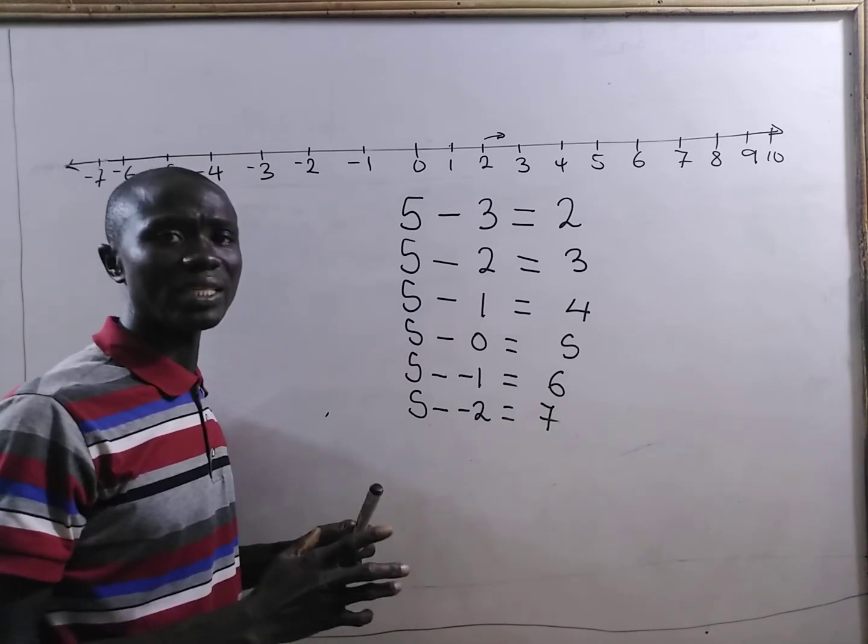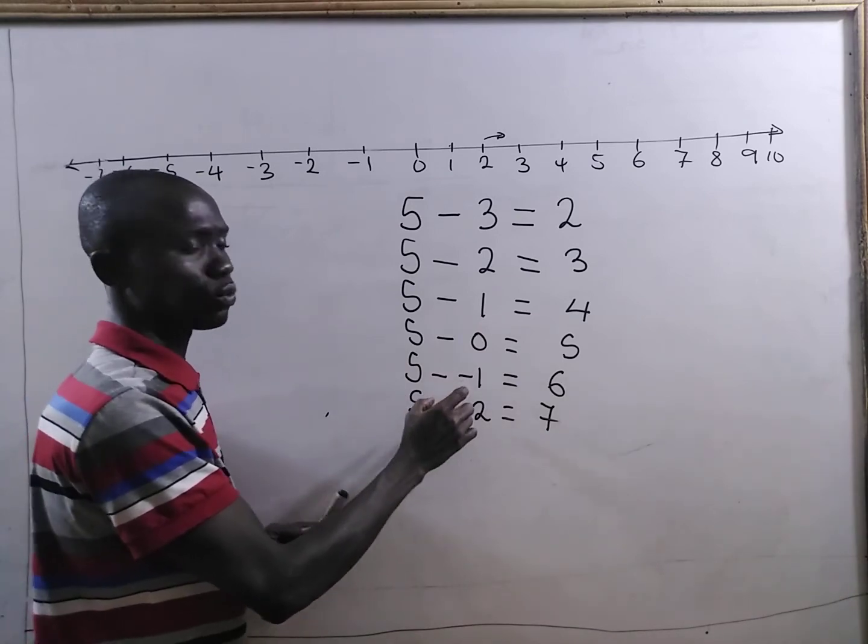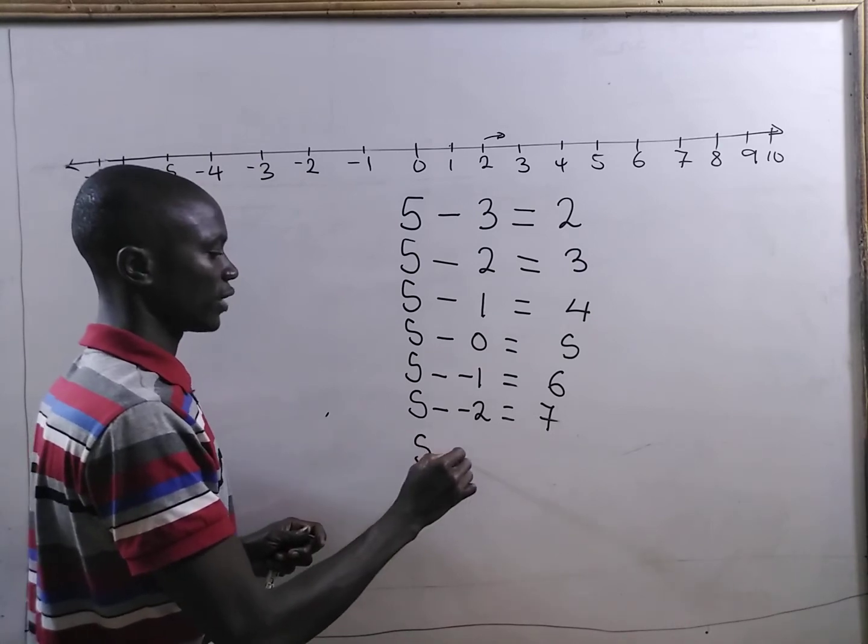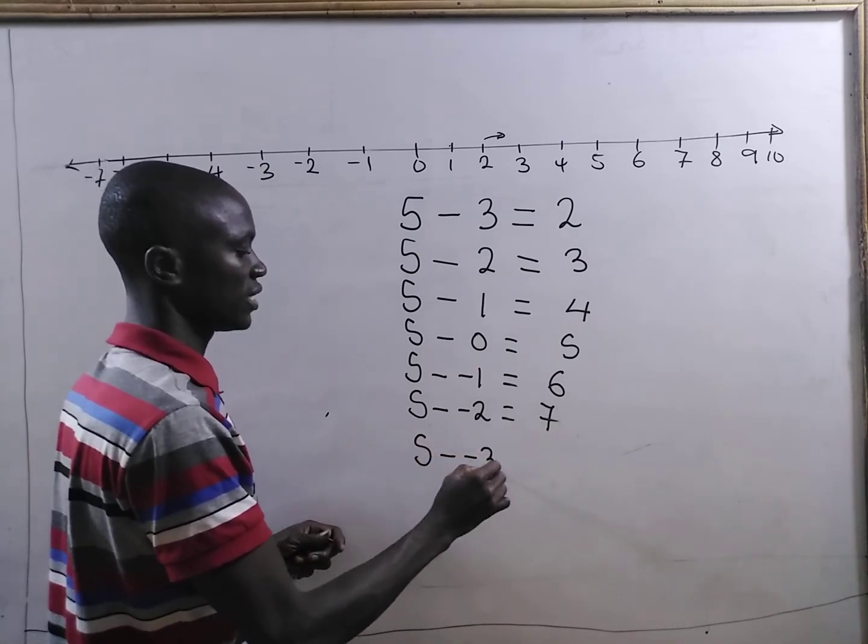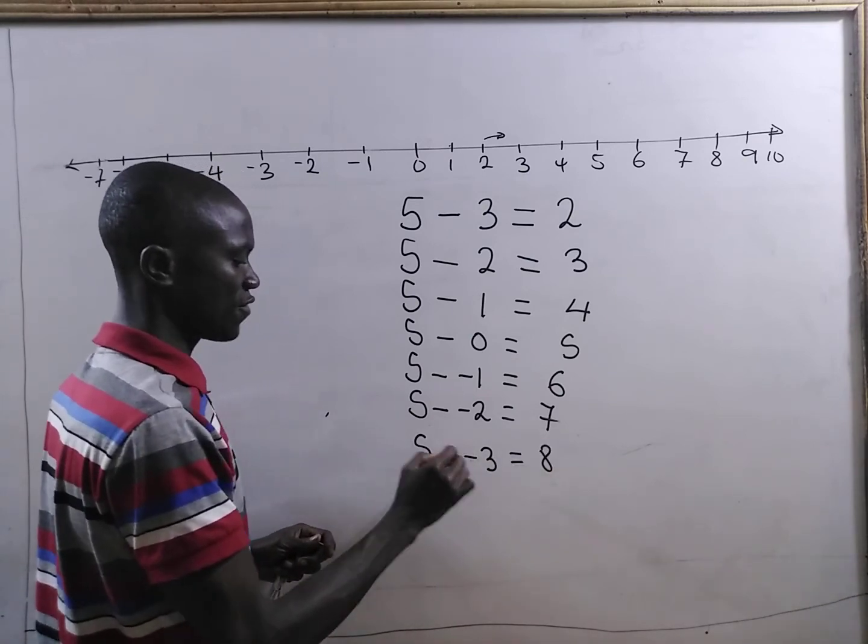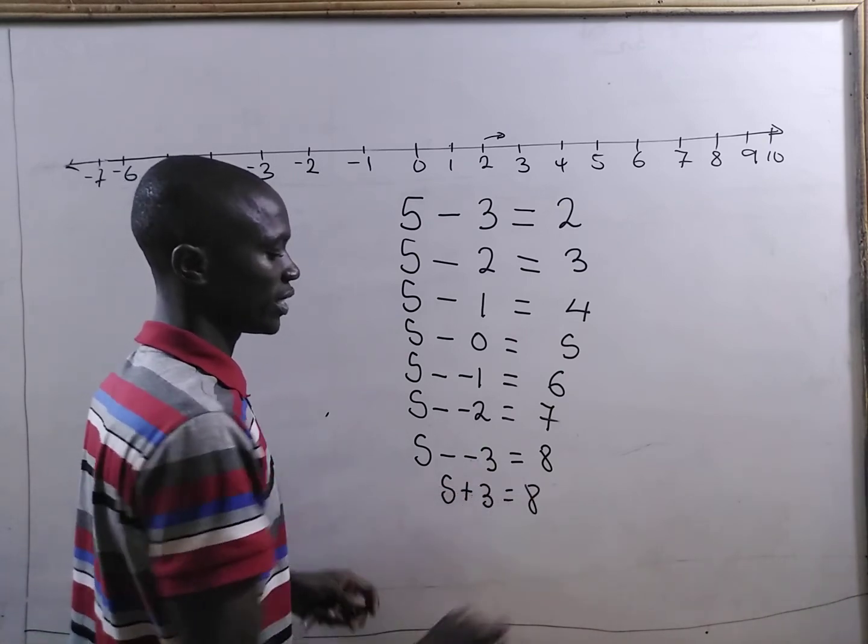So, this clearly explains that negative negative will give us positive. Here, if I have, say, 5 minus minus 3, it is clearly positive 8. That is, 5 minus minus 3 is the same as 5 plus 3 equal to 8.